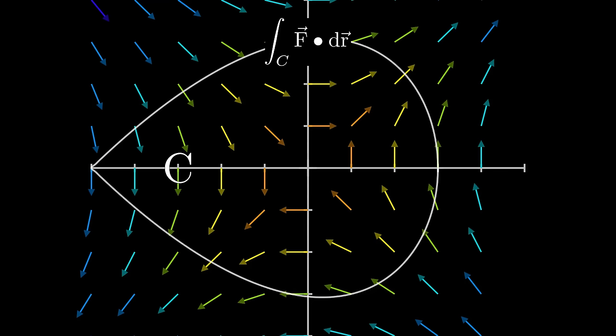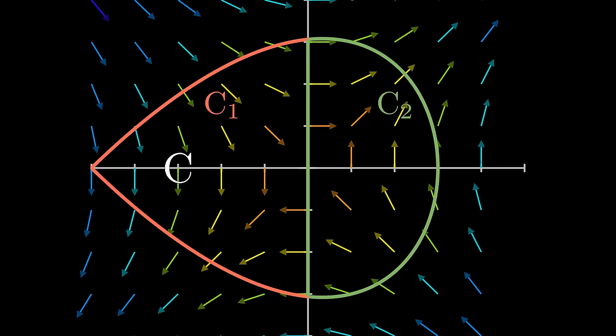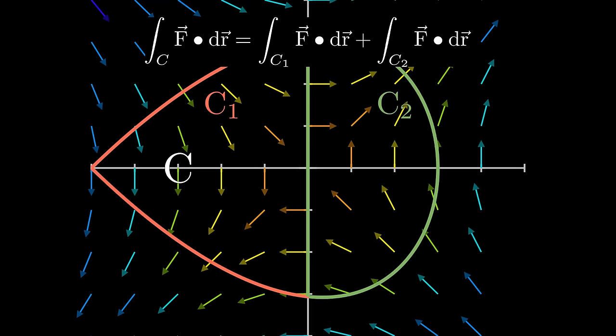Now let's look at our line integral. What would happen if we split it into two curves? The resulting integral is the line integral of f over c1 added to the line integral of f over c2. If we look at this, it's the same as the line integral over c. This is because the center line cancels out.